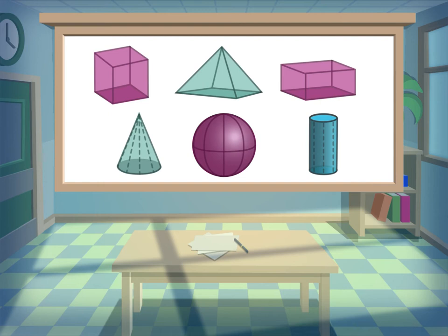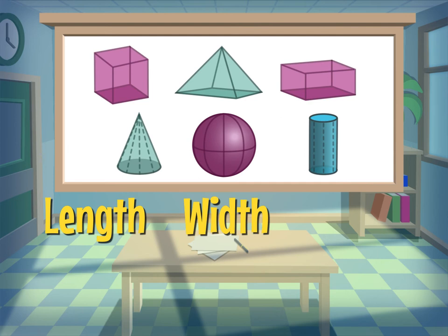Here are some shapes. They are called 3D shapes. 3D shapes are solid objects and have three dimensions. These dimensions are length, width and height.